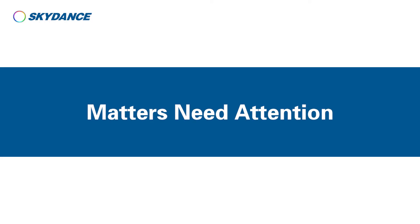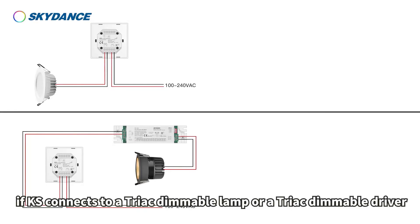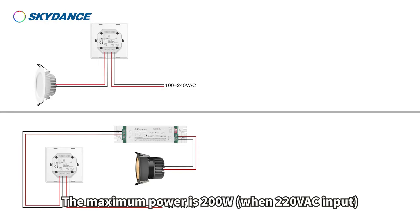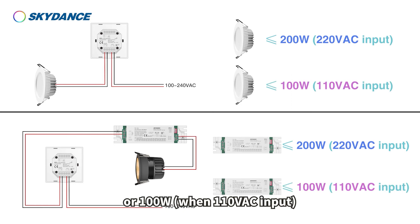Matters needing attention: With regards to Applications 2 and 3, if KS connects to a triac dimmable lamp or a triac dimmable driver, the maximum power is 200 watts when 220 volts input, or 100 watts when 110 volts input.